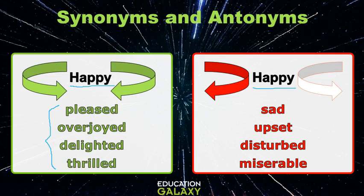Similarly, the antonyms of happy also express slightly different meanings. The idea is to be able to use the word of the right strength or power in the right context. For example, pleased is just one step up from being happy, and overjoyed is when someone is visibly happy.